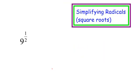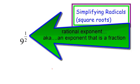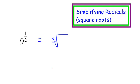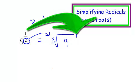9 to the 1/2 is a rational exponent — that's a fancy way to say the exponent is a fraction. We're not used to exponents being fractions. What this means is the same thing as the square root of 9 to the first. When I see a fraction exponent, the bottom number is my root, so I know I'm dealing with radicals. We'll talk more about that later.